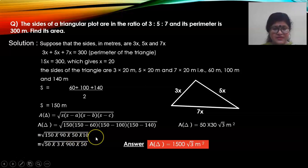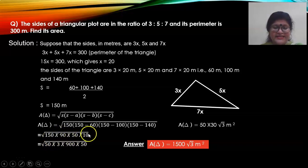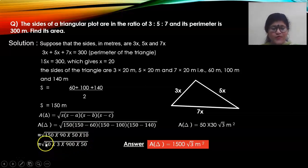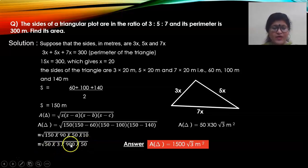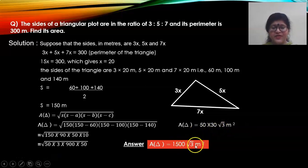The clue is in the step itself: write 150 as 50 into 3, because 50 is already present. So under the root: 50 into 3, then 90, 50, and 10. Multiply 90 into 10 to get 900, and keep 50 as it is. Root 50 into root 50 gives 50, and root 900 is 30. Root 3 stays under the root sign. So the final answer is 1500 root 3 meter square.